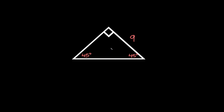Let's start with 45-45-90 triangles. As you can see we have a couple of missing sides — the hypotenuse and one of the legs. But we are given that the length of this leg is nine. In a 45-45-90 right triangle, the two shorter legs are always equal to each other — they're always congruent. So if one leg is equal to nine, the other leg is also equal to nine.